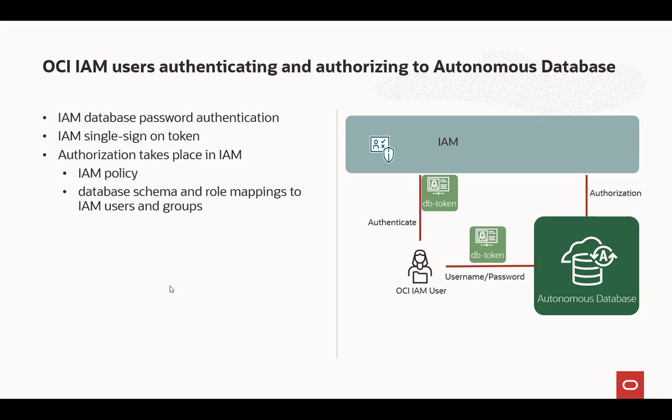Authorization takes place in two places: one is through an IAM policy for token-based access, and then through database schema and role mappings to IAM users and groups, because the OCI IAM user still has to land in a database schema for access to be granted.